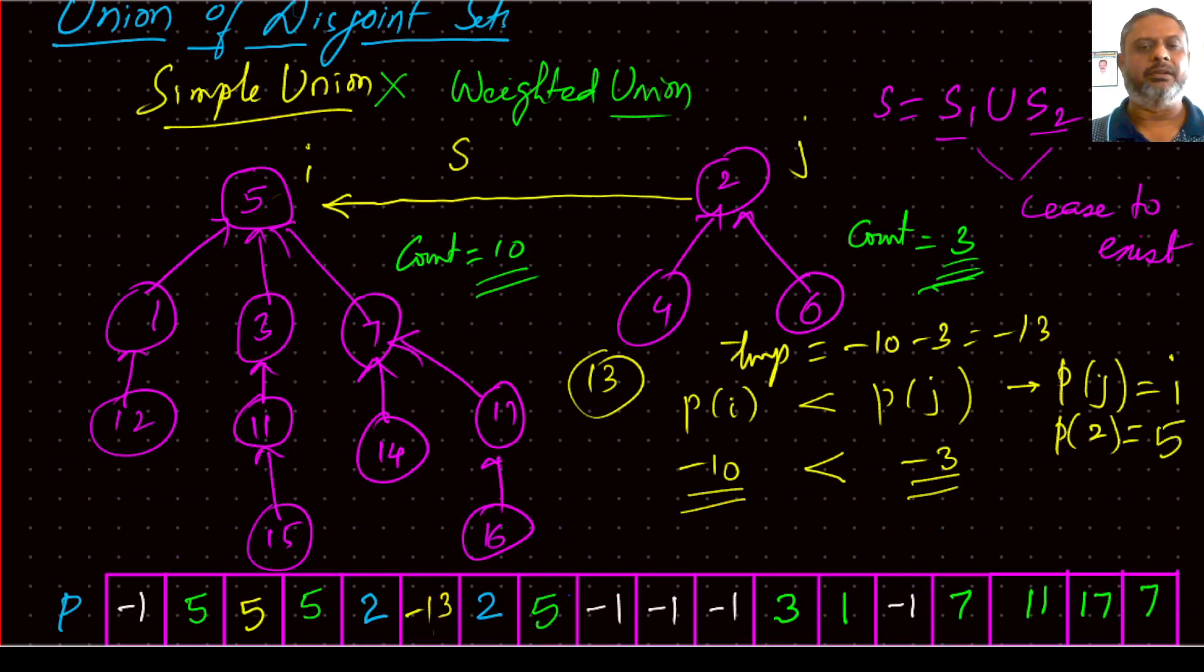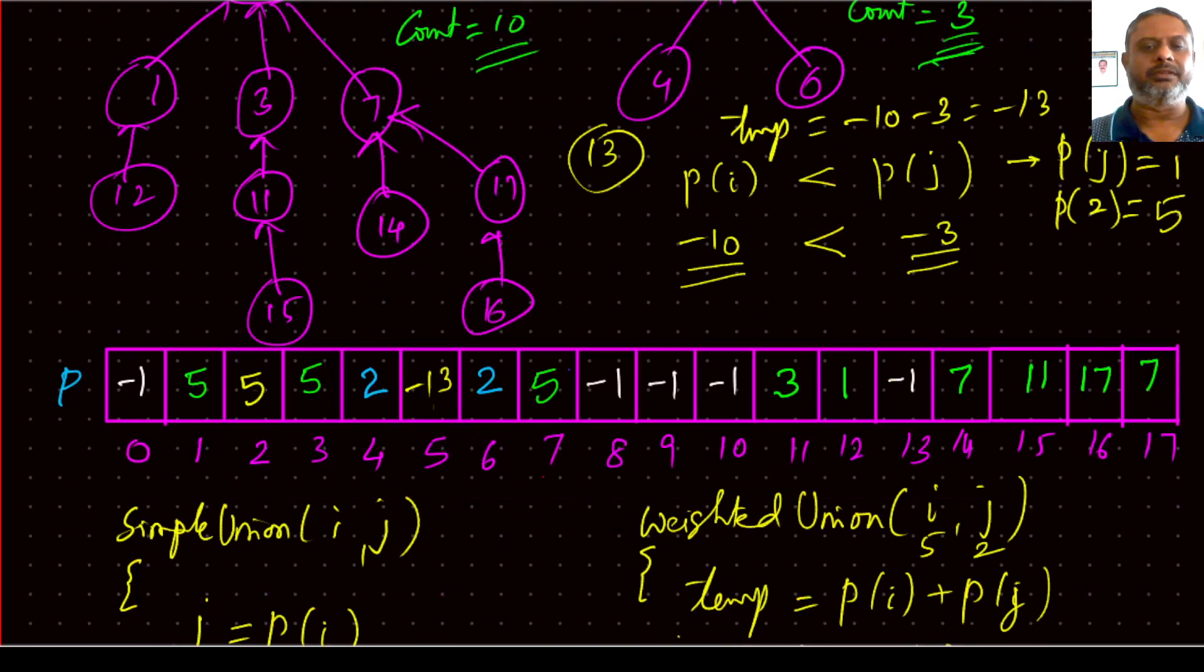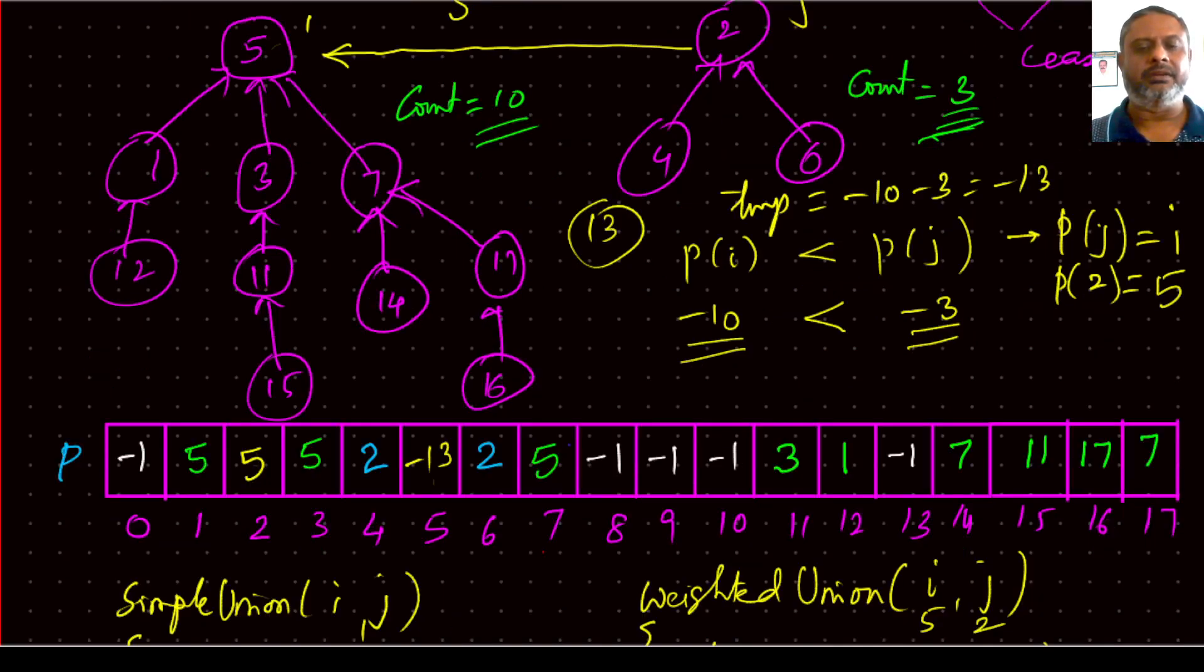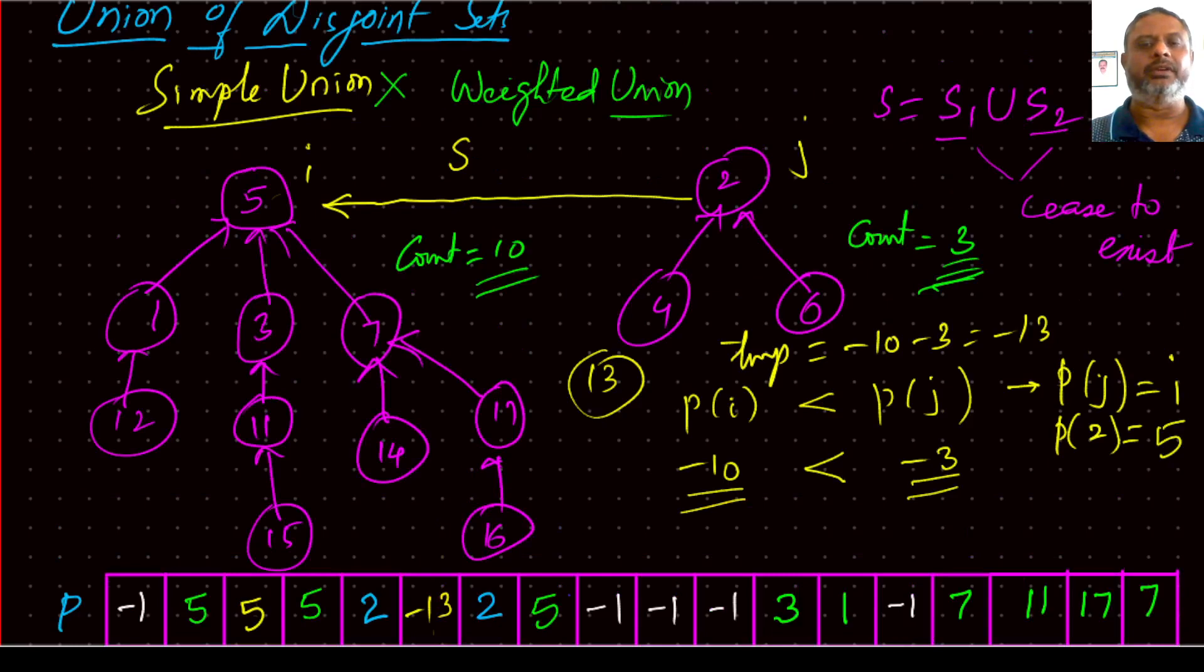So now what has happened is this whole thing will become one set. Yes. And in all 1, 2, 3, 4, 5, 6, 7, 8, 9, 10, 11, 12, 13 are the nodes. That's why it is said minus 13 and 5 is the leader. So at leader's position minus 13 is written and all other places, the parents numbers are written. So that's the weighted union.